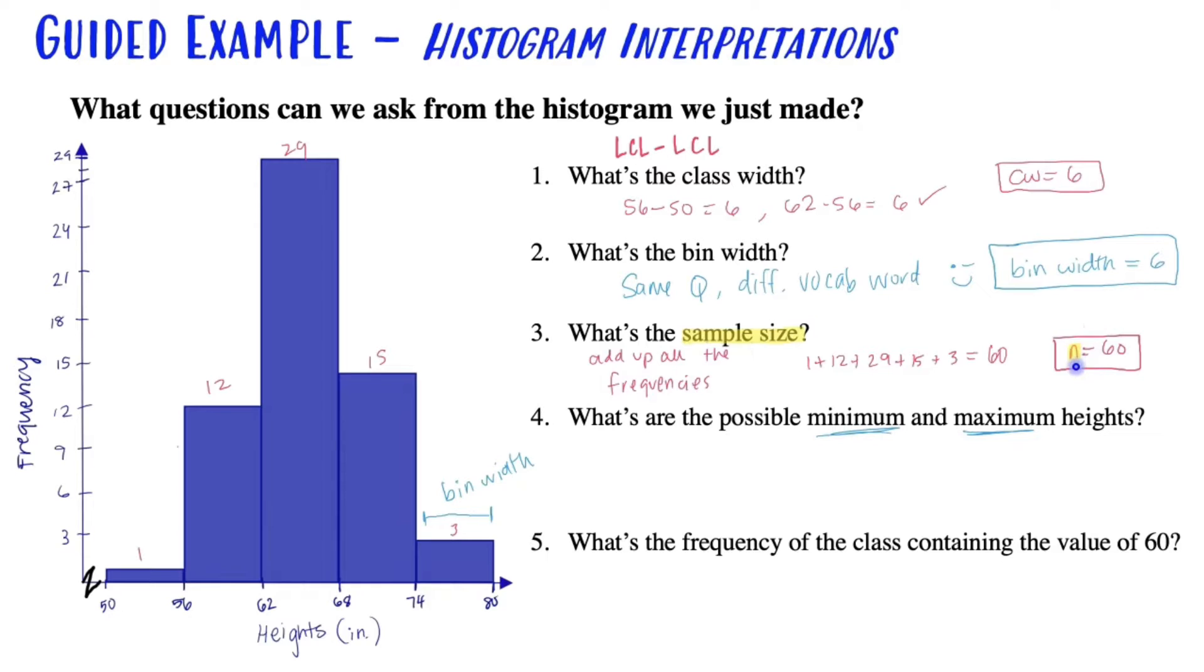And yes, in this class, lowercase and capital will mean something. So when you get to Chapter 3, you'll learn that a lowercase n refers to a sample, and a capital N refers to a population. So we want to distinguish it with a lowercase n.